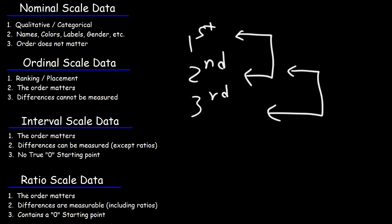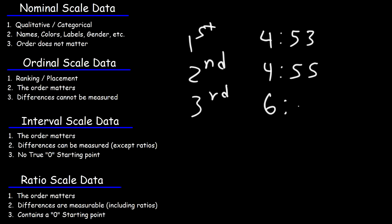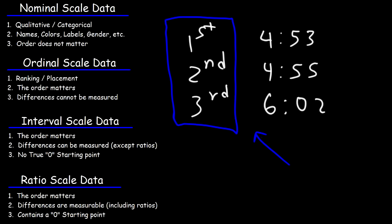The difference between first and second place is not the same as the difference between second and third place. If you're looking at numbers, 2 minus 1 is 1 and 3 minus 2 is 1, but that's not the right way to look at it. For example, the first place finisher took 4 minutes 53 seconds, second place took 4 minutes 55 seconds, and third place took 6 minutes 2 seconds. So the gap between first and second is very different from the gap between second and third — you can't measure that difference from rank alone.